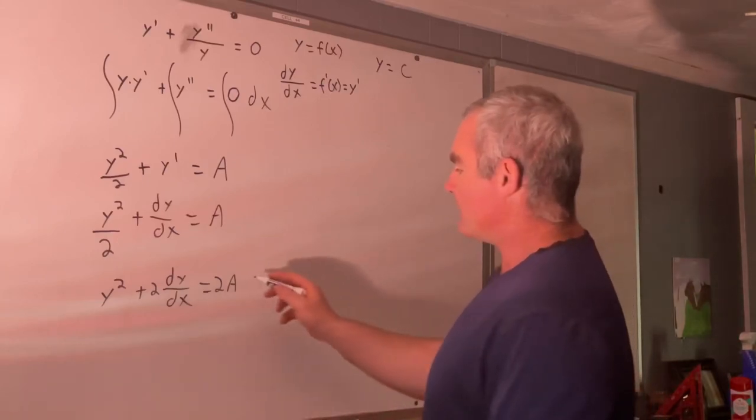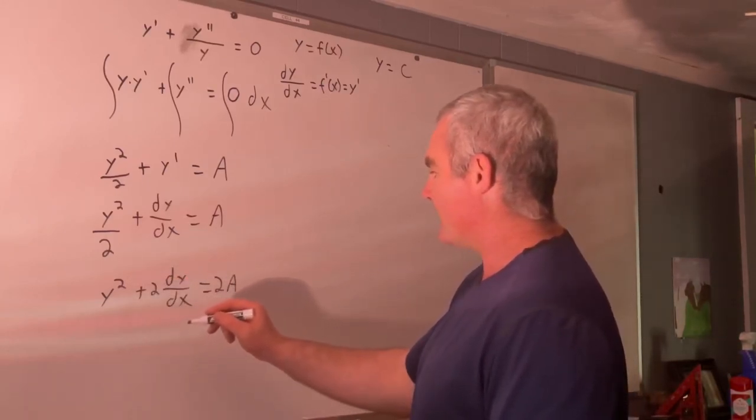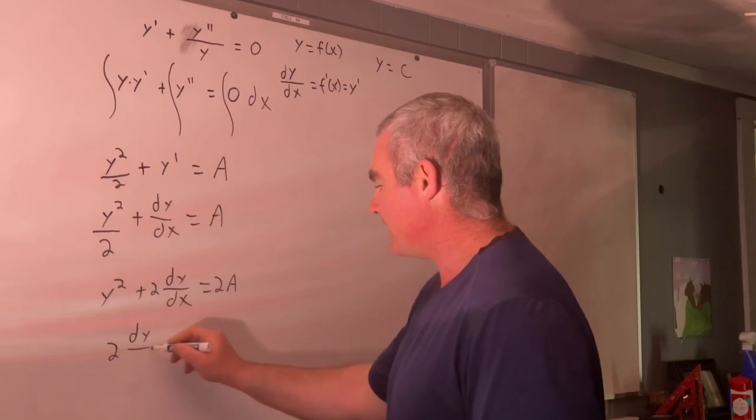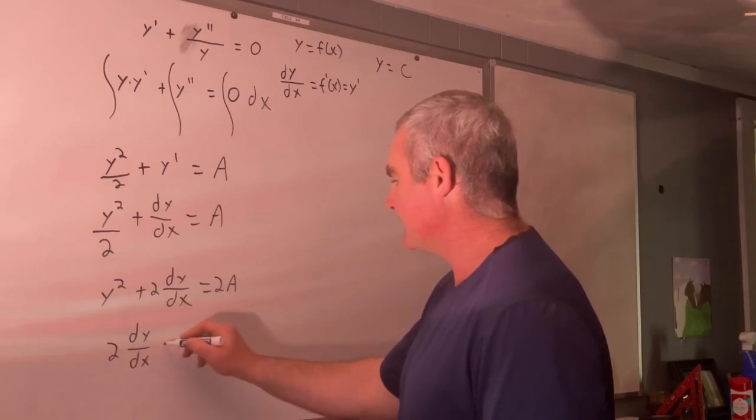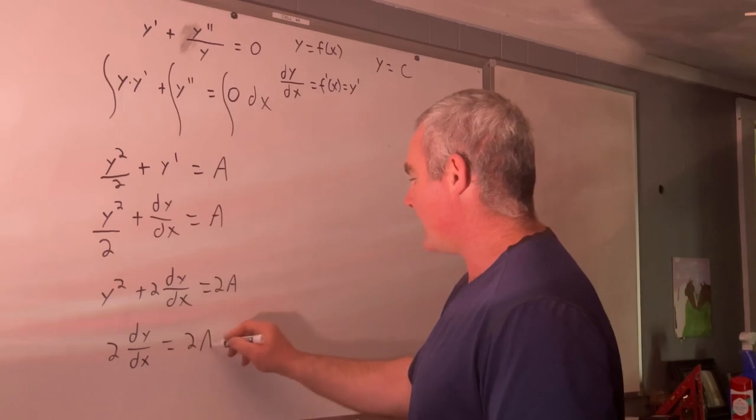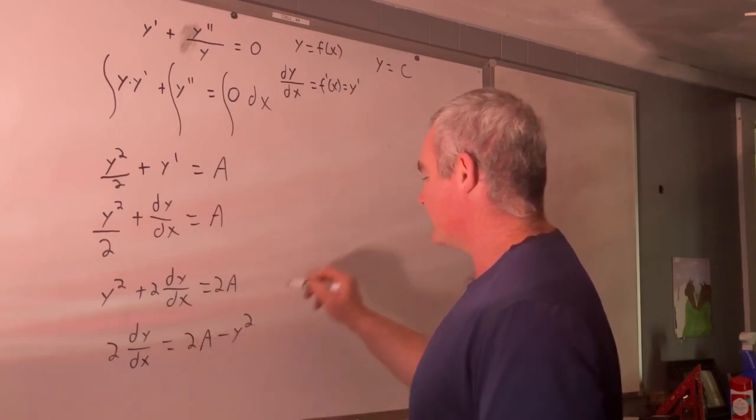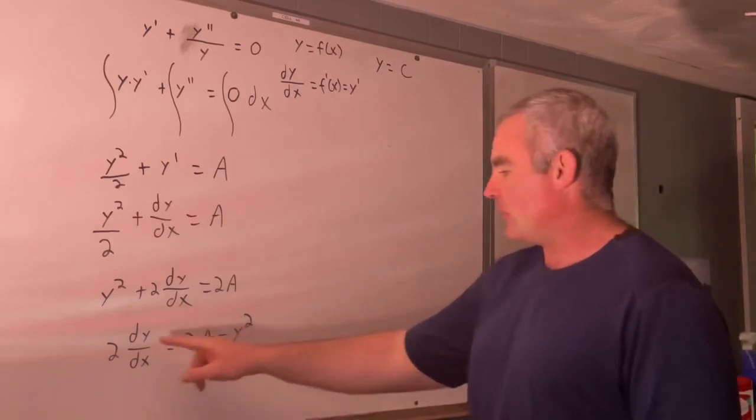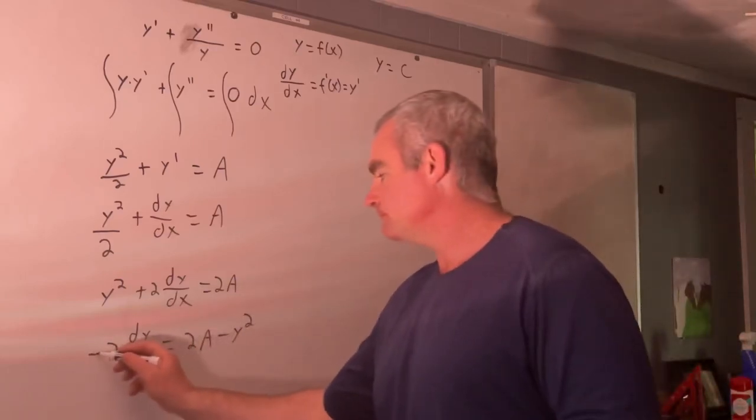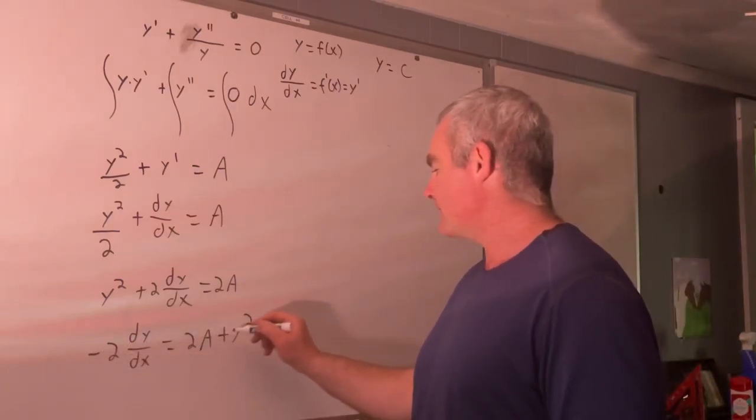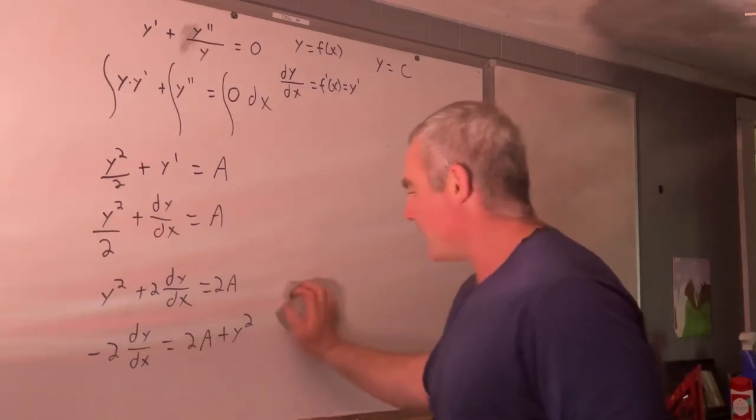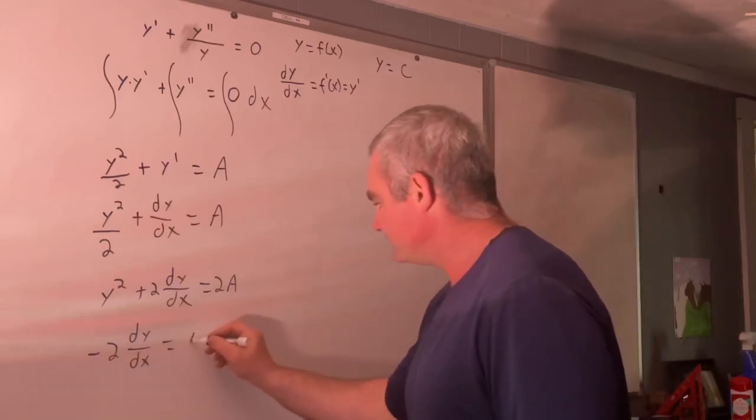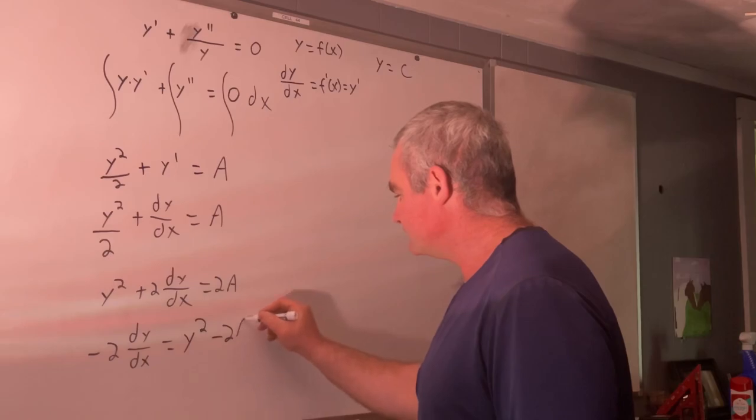Now I'm going to subtract y squared from both sides. So we get two dy dx equals two a minus y squared. And now I'm going to just multiply both sides of this by a negative one. That becomes a plus. And I'm just going to say this is y squared minus two a.